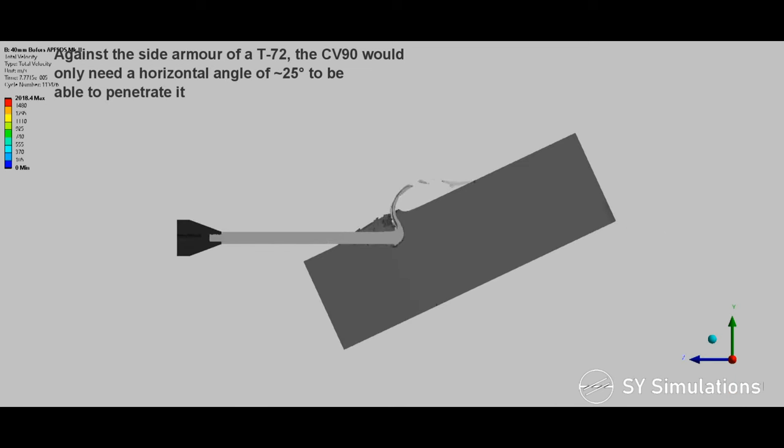Against the side armor of a T-72, the CV-90 would only need a horizontal angle of 25 degrees to be able to penetrate it.